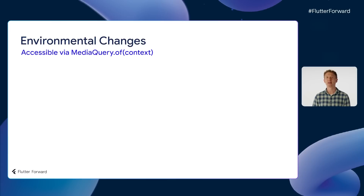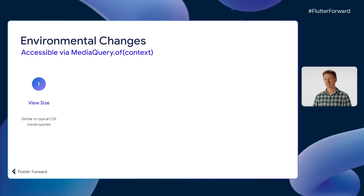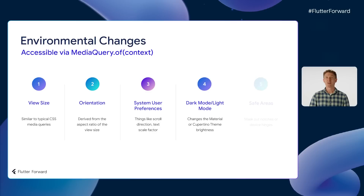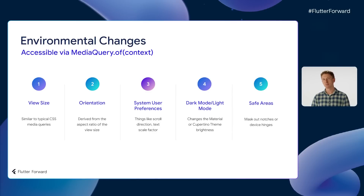You can use this pattern to adapt to many different environmental values, such as view width — as mentioned in another Flutter Forward talk, Rodion and Liam's Translating Design to Code, which will be linked in the description of this video — orientation, user preferences like the text scale factor, brightness like light mode and dark mode, and you can also respond to physical layout, including safe areas affected by the software keyboard, various notches on mobile devices, or hinge locations on foldables.